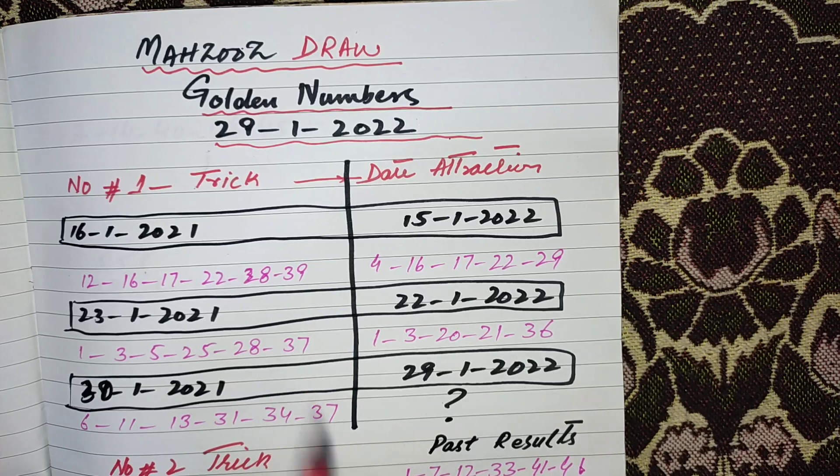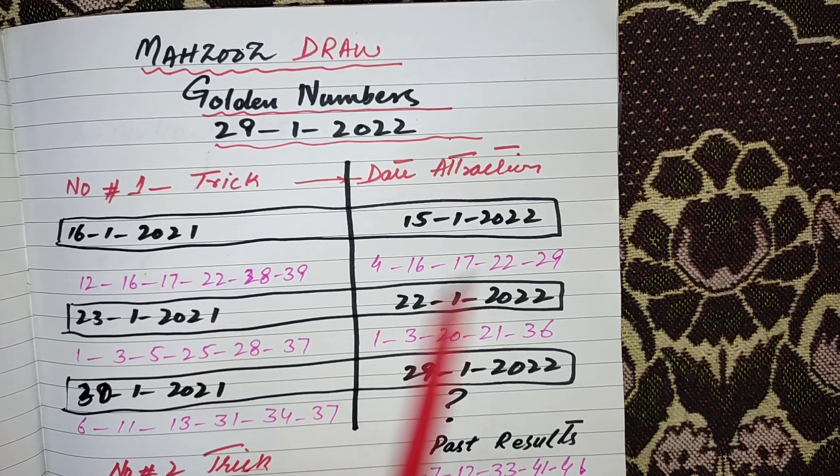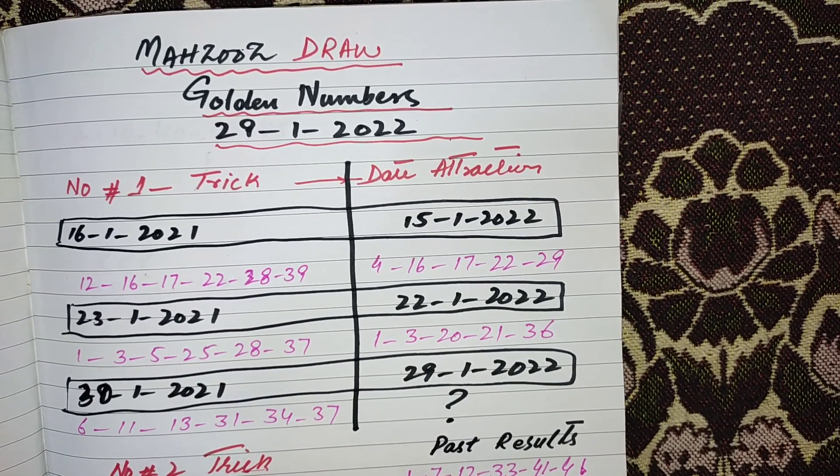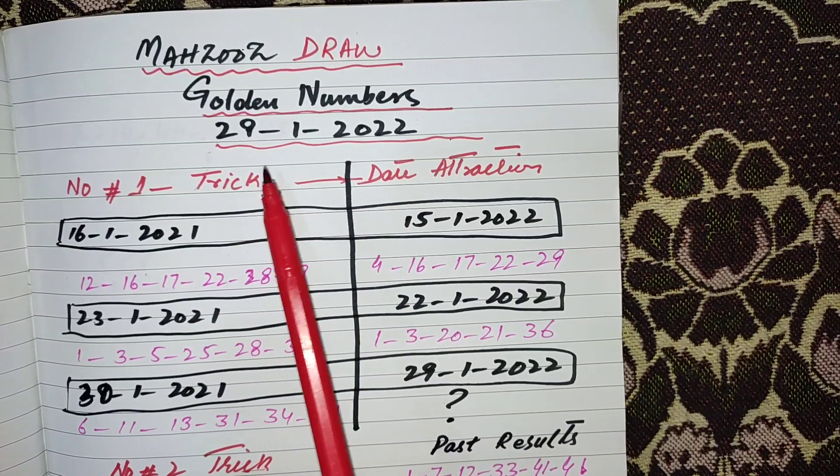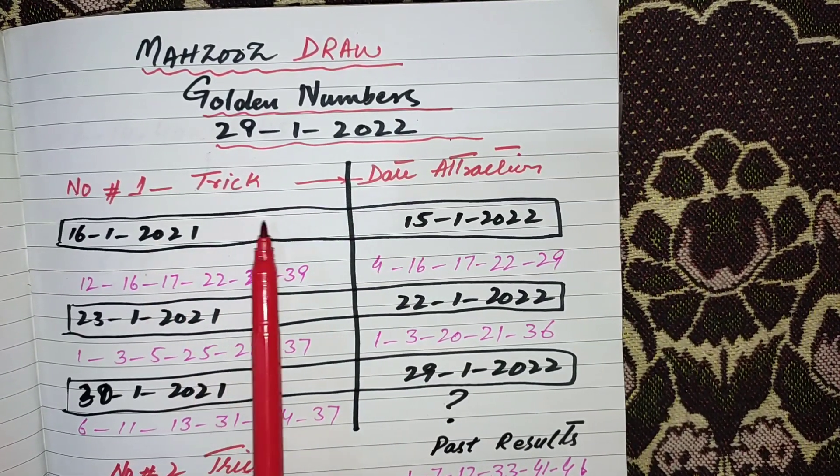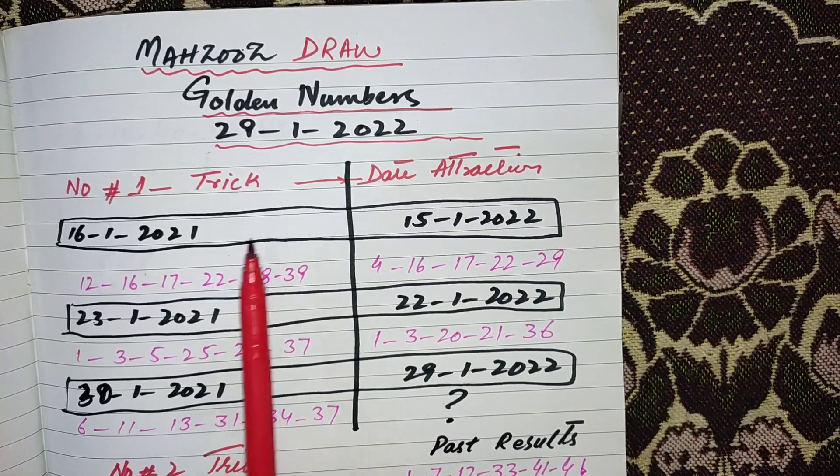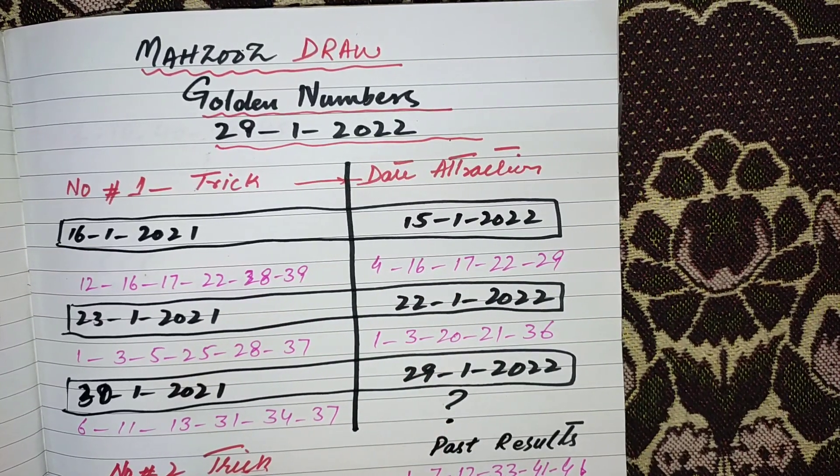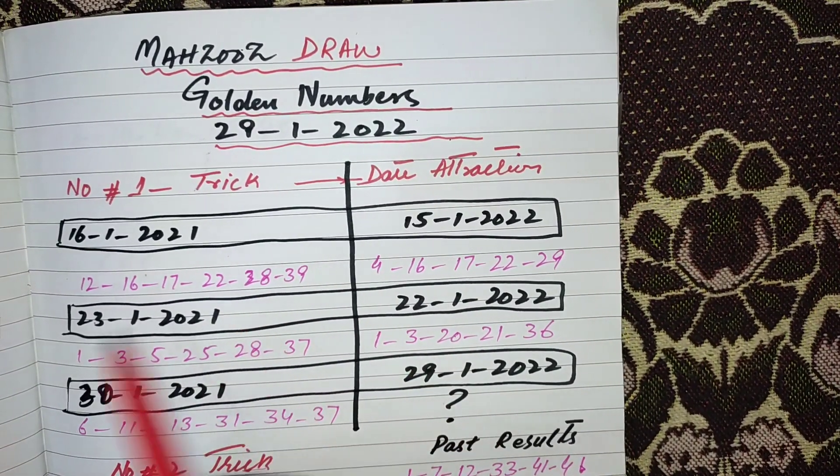Hi, dear friends. Today I will show two best tricks which will give us the best golden numbers for the coming draw, which is drawing on 29th. Number one trick you already know that I already showed in my previous video. This is a successful trick.